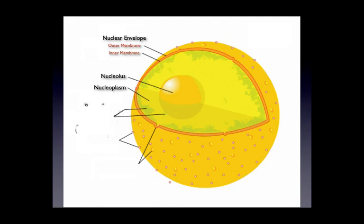Additional sub-organelles include chromatin, which is suspended in the nucleoplasm; ribosomes, which pepper the outer membrane; and nuclear pores, which are holes that allow substances such as mRNA passage through the envelope.